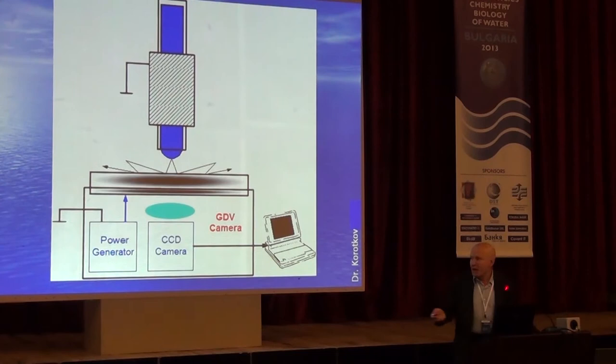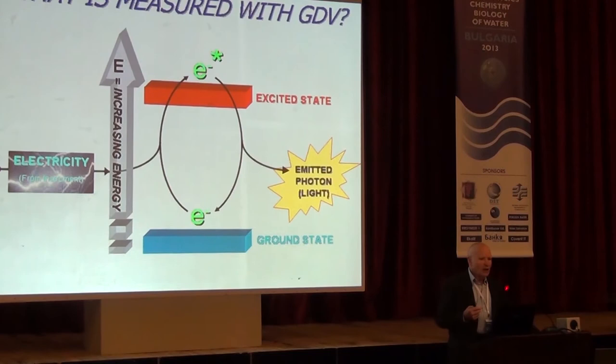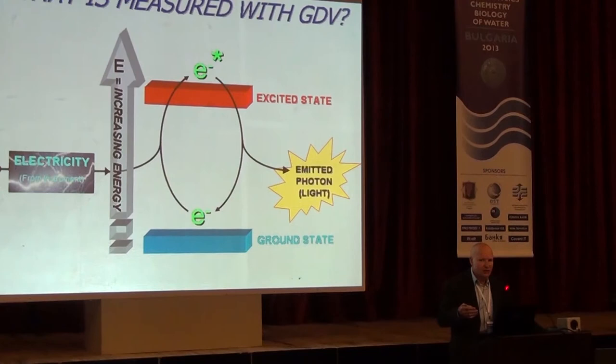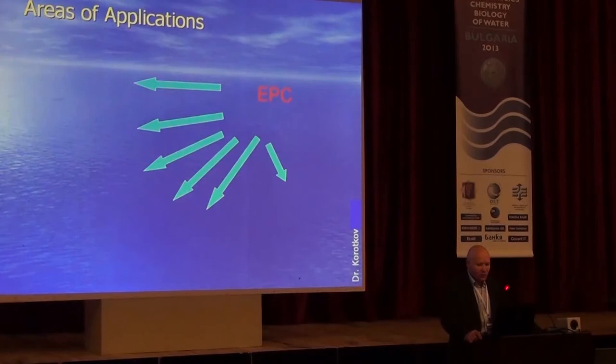We are talking about a quantum electromagnetic process, because we excite electrons and they emit photons. Those photons are related to the activity of the subject, to its physical properties, and to the surface structure of the subject — so there are many, many parameters involved in this approach.